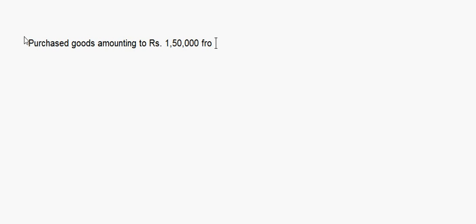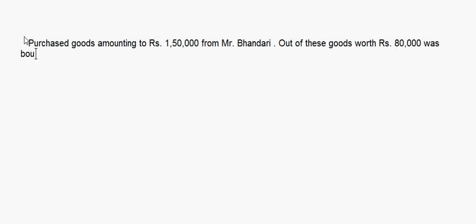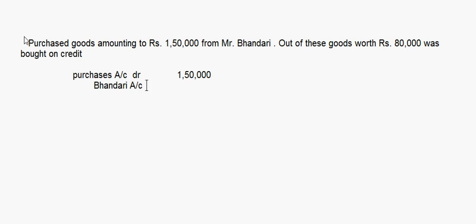Purchased goods amounting to rupees 1,50,000 from Mr. Bhandari. Out of these, goods worth rupees 80,000 were bought on credit. So purchases account is debited for the full amount of 1,50,000. Mr. Bhandari account is credited 80,000 for the credit portion, and cash account is credited 70,000 for the remaining cash purchase.